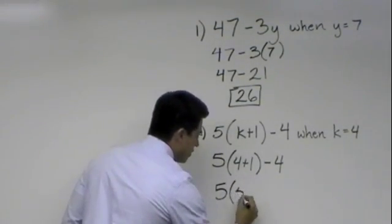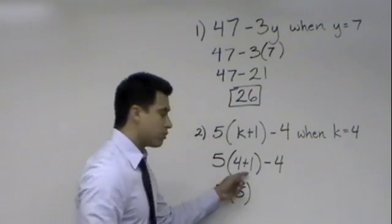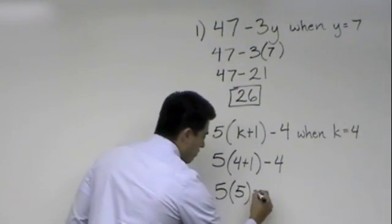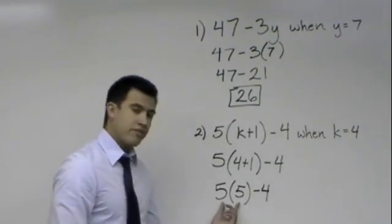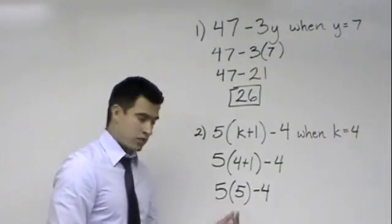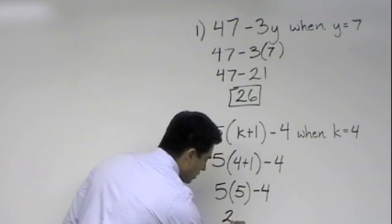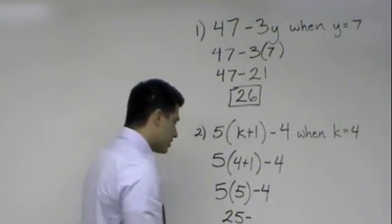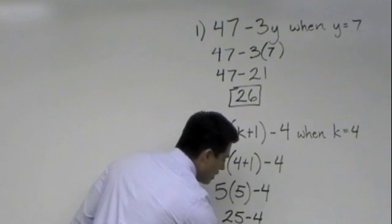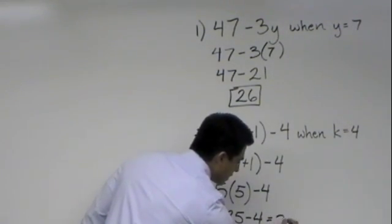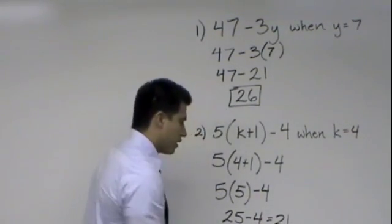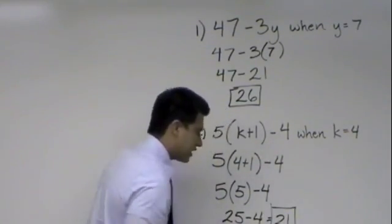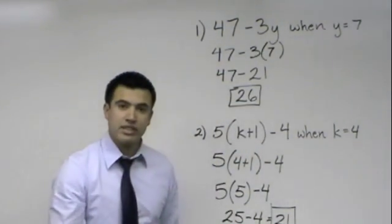So it would be 5 times 5 because 4 plus 1 is 5 minus 4. Now 5 times 5 is 25. So since that's multiplication we always do multiplication before subtraction. So we would do 25 minus 4 and that will give us the answer of 21. And let me go ahead and put a box around that too for Aunt Sally because remember she's studying along with us.